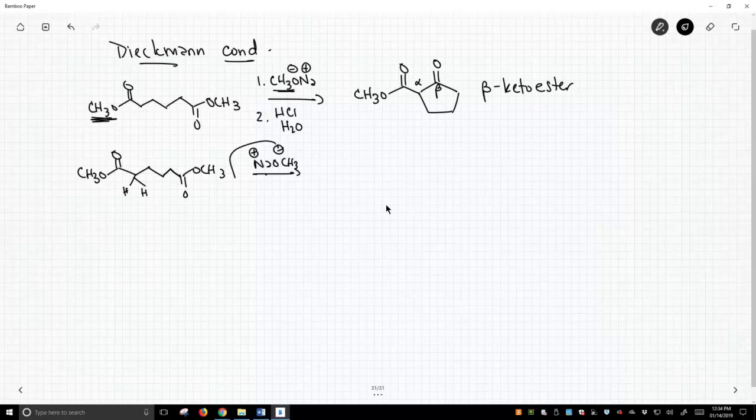So first step of the Claisen was deprotonate to make an enolate. First step of the Dieckmann is to deprotonate and make an enolate.